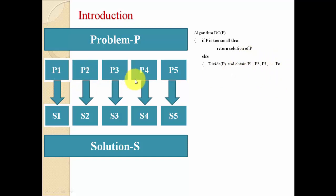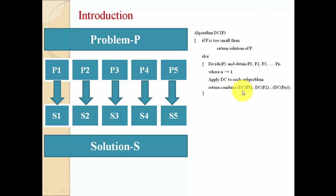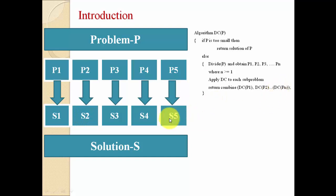Now we have different parts P1 to Pn and we find the solution using the ad hoc algorithm. We check whether n is greater than or equal to 1, then apply divide and conquer to each sub-problem. This is a recursive call — we call the same function divide-and-conquer passing P1, then P2, then Pn as arguments. Each part is smaller, so P1 gives solution S1, P2 gives S2, and Pn gives Sn. At the end we combine every solution. This is the divide and conquer strategy.